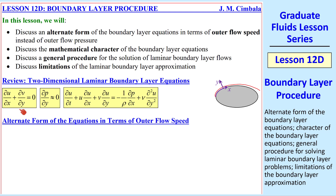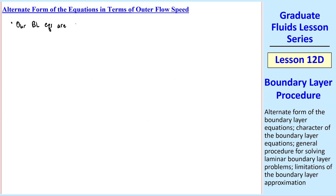Here's a review of the 2D continuity, y-momentum, and x-momentum equations for laminar boundary layers. These apply to body-fitted or boundary layer coordinates where x is parallel to the wall in the streamwise direction, and y is always locally normal to x. z is out of the page, and this is a two-dimensional body. Our boundary layer equations are in terms of pressure, which is a function in general of x and t. If it's steady flow, p will be a function of x only.